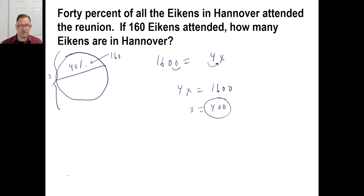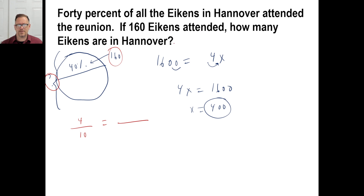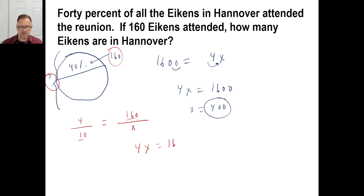Using the fraction-equals-fraction method for the same problem: 40% is 4/10, which reduces to 2/5. Set up 160 over X equals 4/10. The bigger number goes on the bottom. Cross multiply: 4X equals 160 times 10 equals 1600. Same result — 400 icons total.